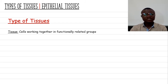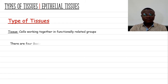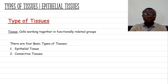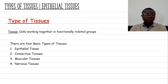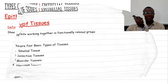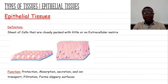When talking about the types of tissue, there are basically four types in the human body. The first is epithelial tissue, next we have connective tissue, then muscular tissue, and lastly nervous tissue. Our focus here is going to be on the first of these — the epithelial tissue.